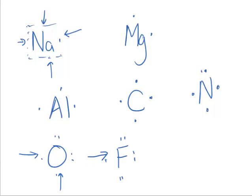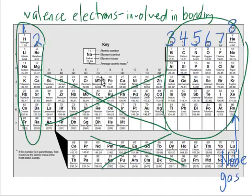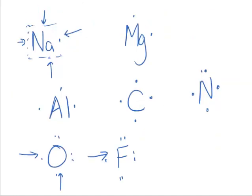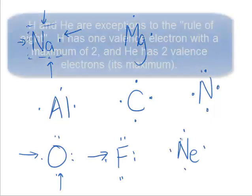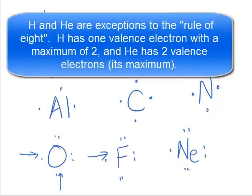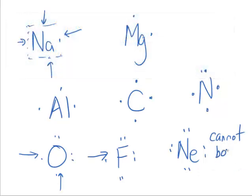And then in the last group, we can pick neon. Neon has eight valence electrons. And we'll notice that all of them will be paired. When they're all paired, this atom cannot bond because unpaired electrons are the location where bonding happens.